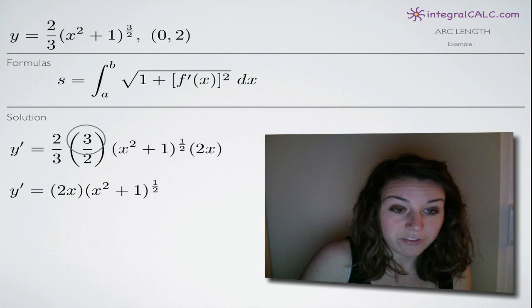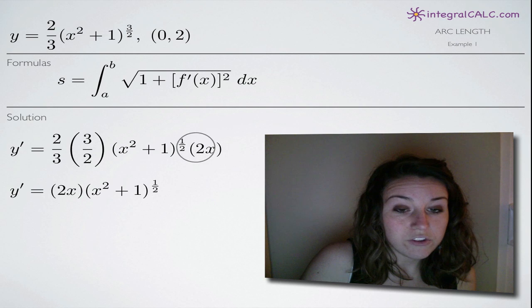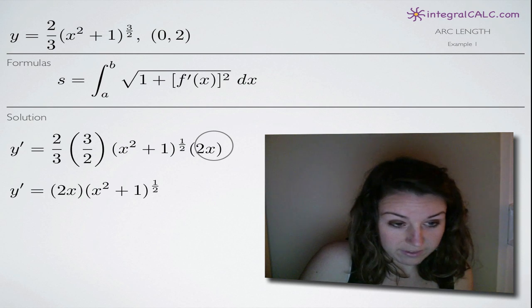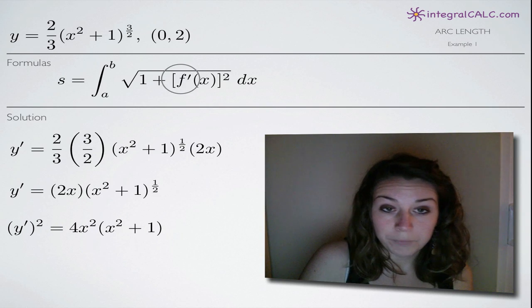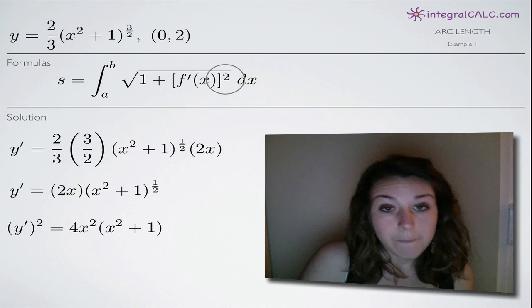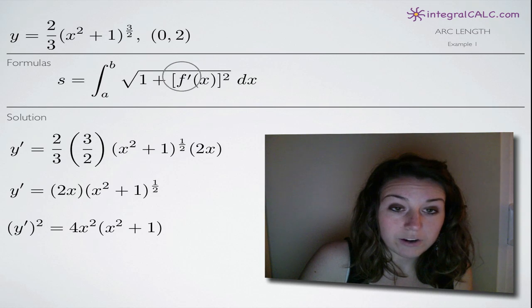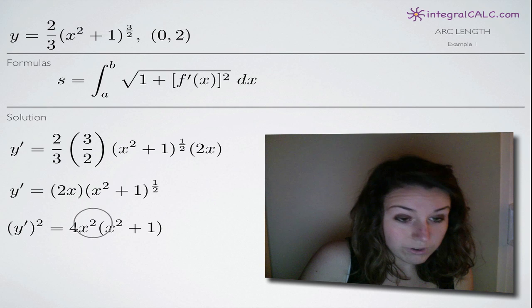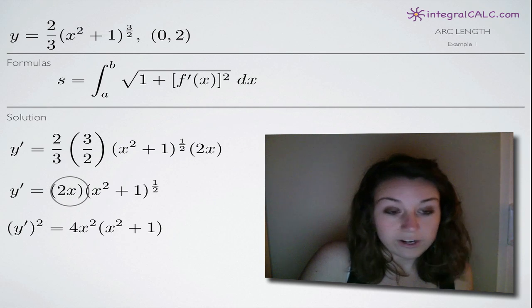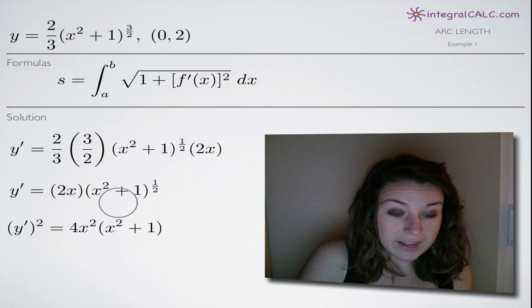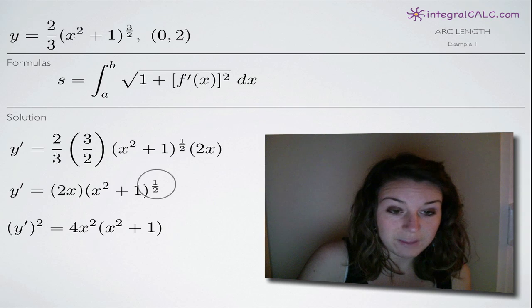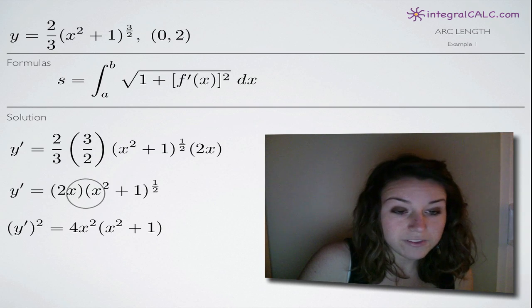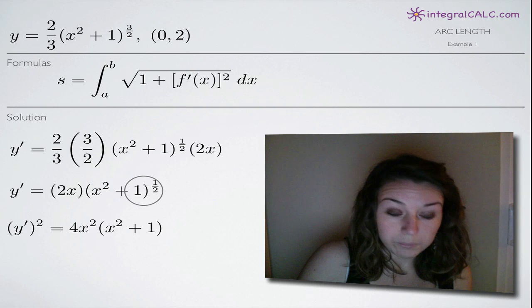And then we're going to go ahead and simplify. So you can see that this 2 thirds times 3 halves, the twos will cancel, the threes will cancel. We'll end up with one in the front. So we can just move this 2x to the front here and everything else stays the same. And now, we're going to go ahead and square this function because we're looking for the derivative of the original function f of x but squared, as you can see here. So we're going to square it so we can plug in for this whole thing.